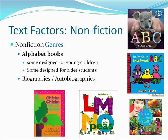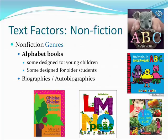Many alphabet books are designed for young children who are learning to identify the letters of the alphabet. Others are intended for older students and have words representing each letter with an explanation of the concept in paragraph-long entries. The book H is for Hoosier covers Indiana A to Z. There are actually two versions by two different authors. Pictured on this slide are alphabet books for younger children.